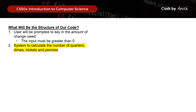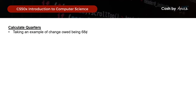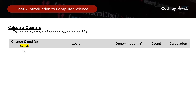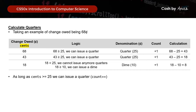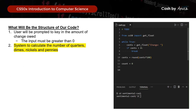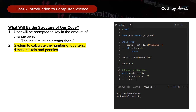Now let's calculate the number of quarters, dimes, nickels, and pennies. Taking the example where change owed is $0.68: as long as the change owed is greater than or equal to 25, we can issue a quarter. The balance becomes 43, and since it's still greater than 25 we issue another quarter. The balance is now 18, so we can no longer issue quarters. In the program, we label this section 'number of quarters': while cents is greater than or equal to 25, update the cents value and increase count by one.